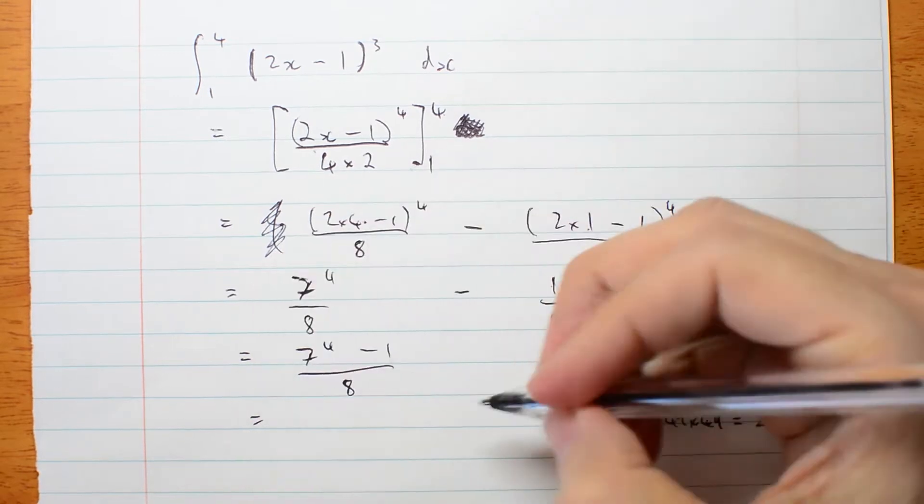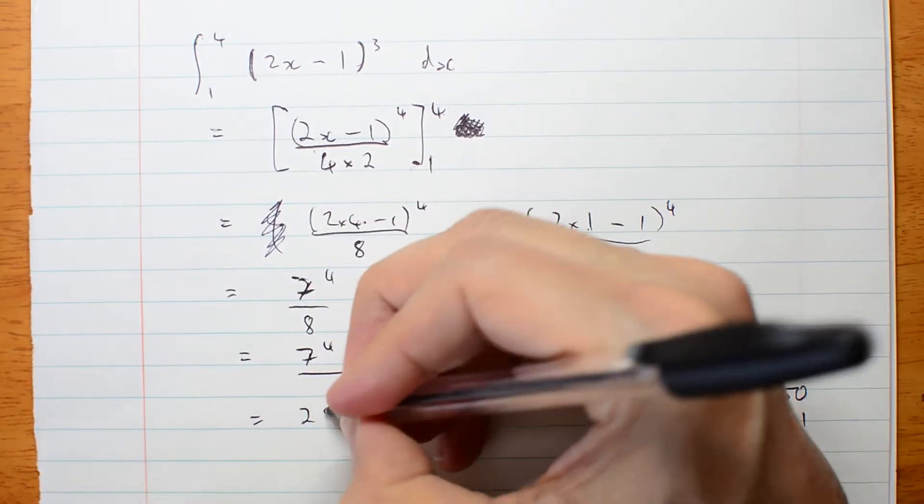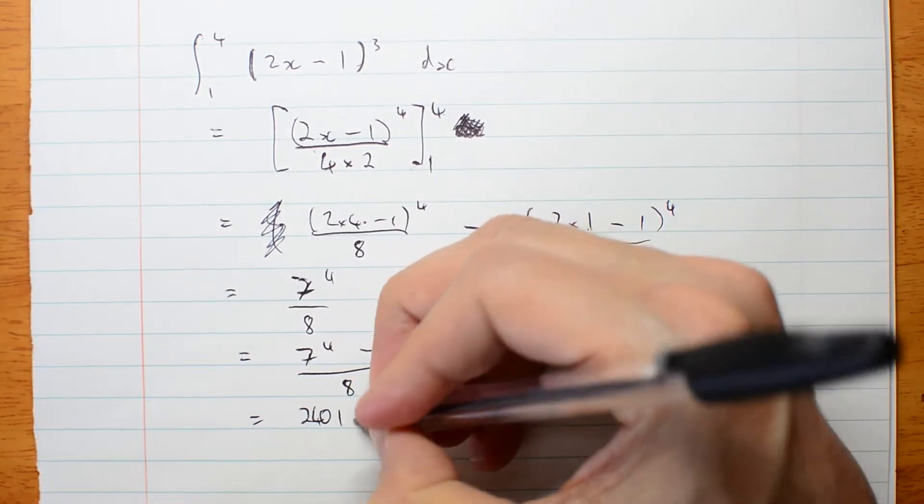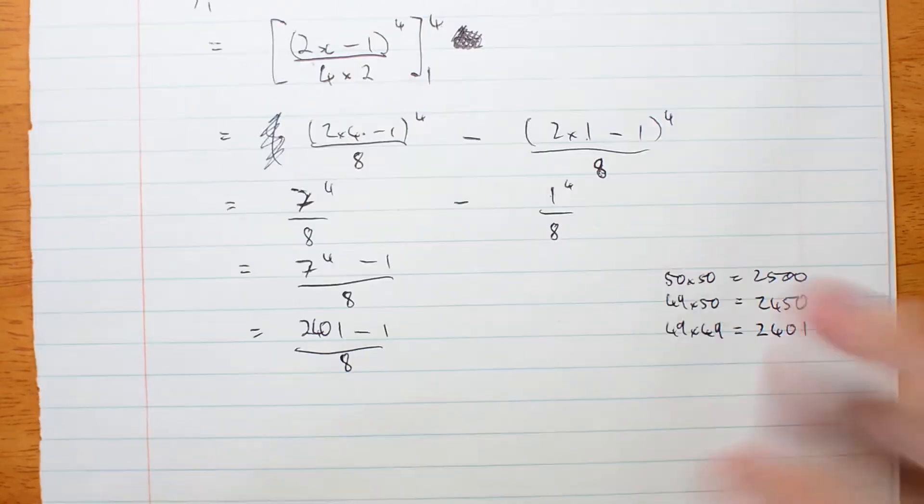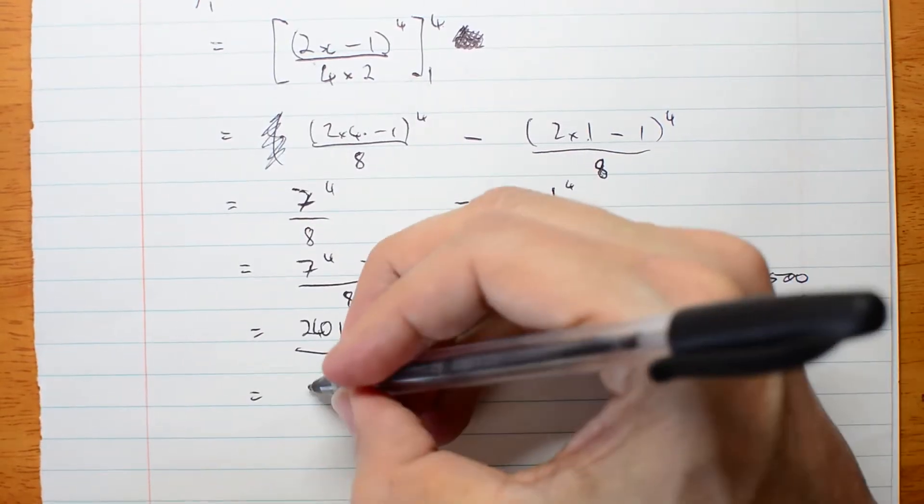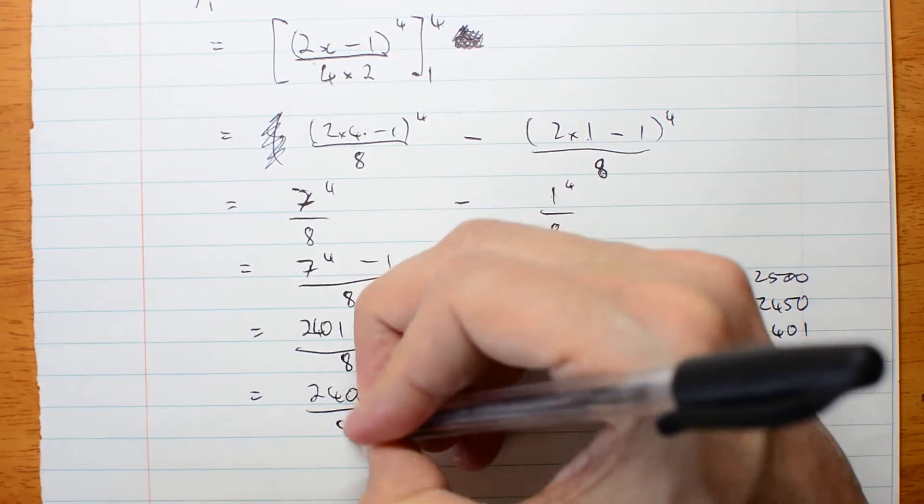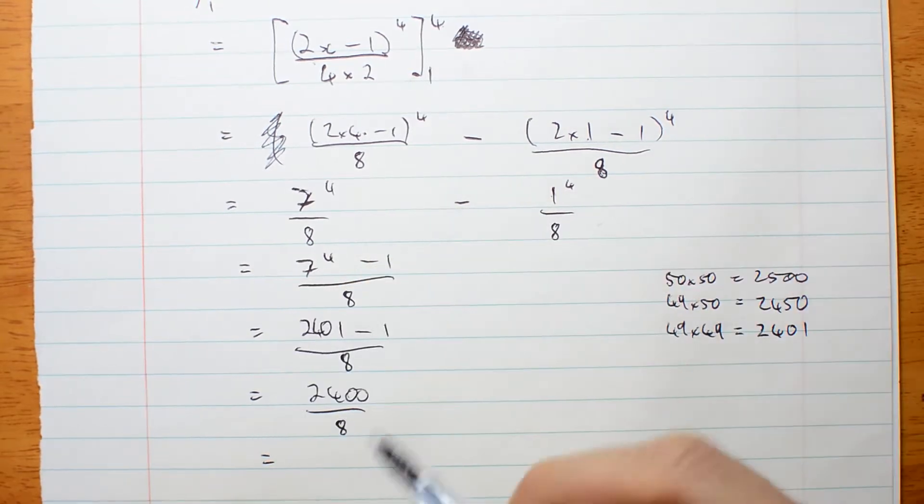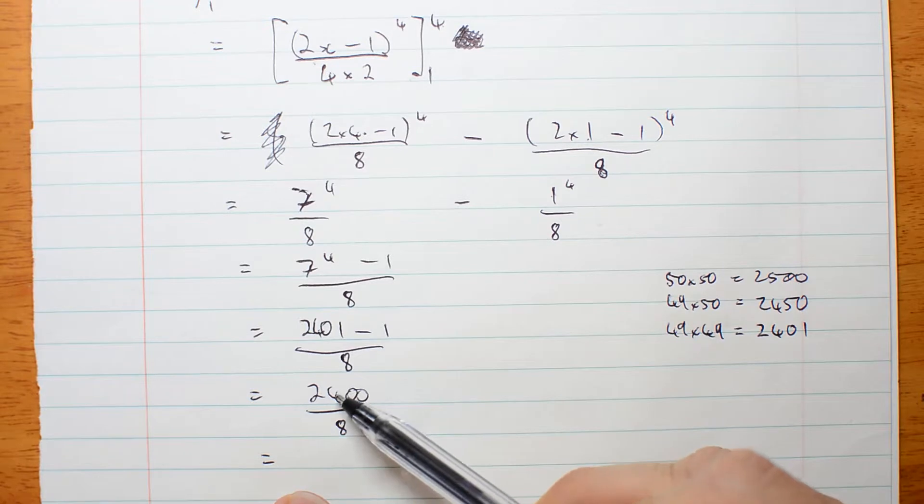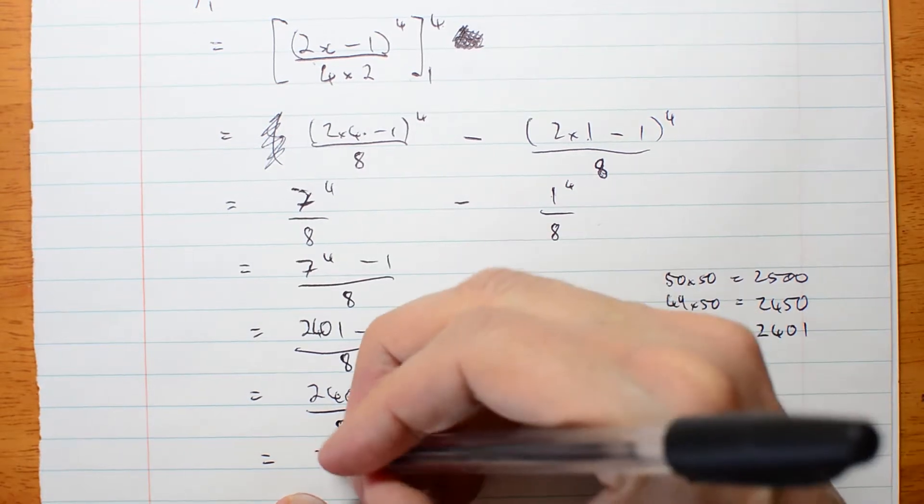So that is 2,401 minus 1 over 8, which is 2,400 over 8. And 24 on 8 is 3, so that's 300.